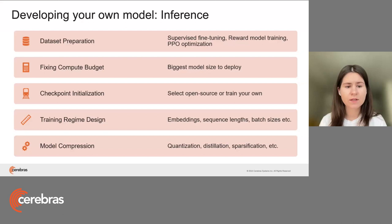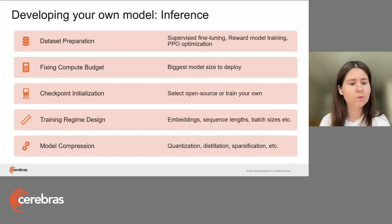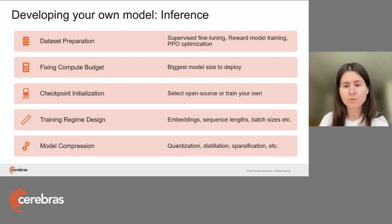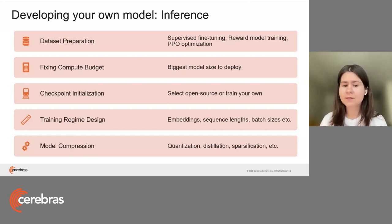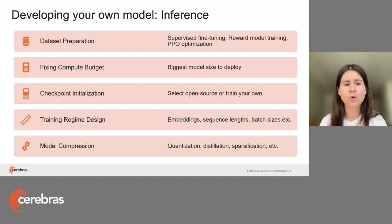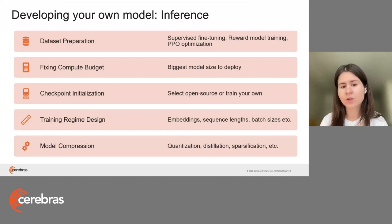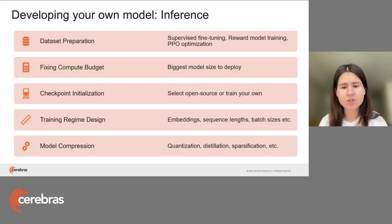After fixing the dataset and understanding whether to go with supervised fine-tuning or reinforcement learning with human feedback, we need to understand our compute budget — what is the biggest model size we want to deploy. It doesn't necessarily mean your pre-trained model size is what you want at fine-tuning stage. One of the obvious options is model compression — you can quantize, distill, or sparsify it at the fine-tuning stage.